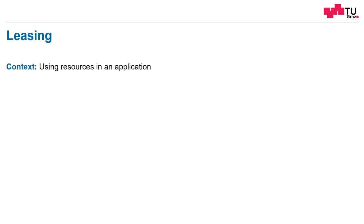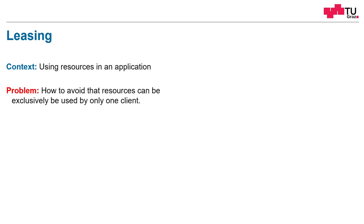What are the properties? The context is that we are using resources in an application. And the problem is: how can we avoid that resources can exclusively be used by one single client? We want to avoid that a single client steals resources from all the others.